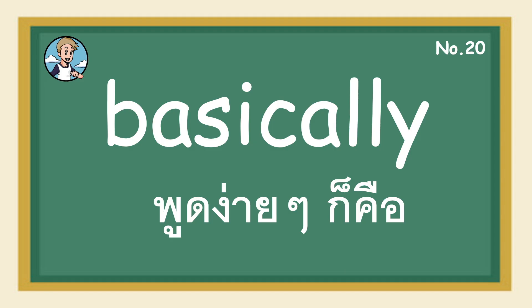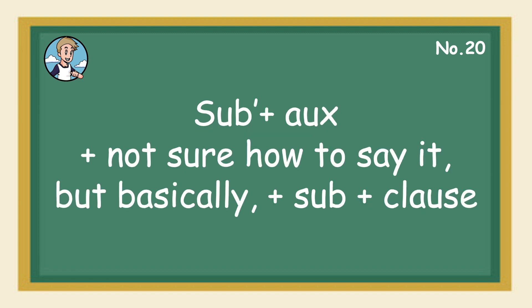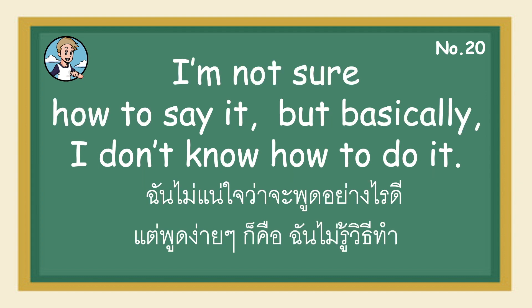Basically, the pattern is: Subject + Auxiliary + 'not sure how to say it, but basically' + Subject Clause. For example: I'm not sure how to say it, but basically I don't know how to do it.